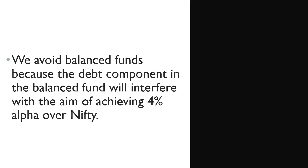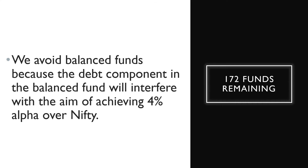Number 9: We avoid balanced funds, because the debt component in a balanced fund will interfere with the aim of achieving 4% alpha over NIFTY. Then, 172 funds remaining.